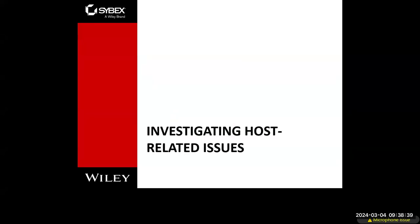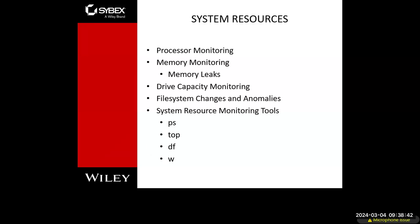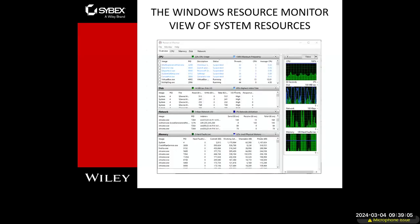In investigating host-related issues — probably one of the first steps in incident response — you look at processor monitoring, memory, memory leaks, drive capacity, file system changes, and file integrity checks. There are all kinds of tools: in a Linux system, PS, TOP, DF, and W help monitor memory, processes, and disk space. On the Windows side, you can use Windows Resource Monitor. This is practical for home use if you have a Windows system, and it can even provide graphical monitoring over time.